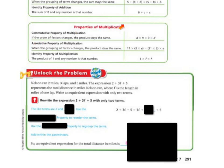Now we have our properties of multiplication, which are similar. The commutative property of multiplication means the order of the factors changes but the product stays the same. So b times 9 equals 9 times b — they're the same.